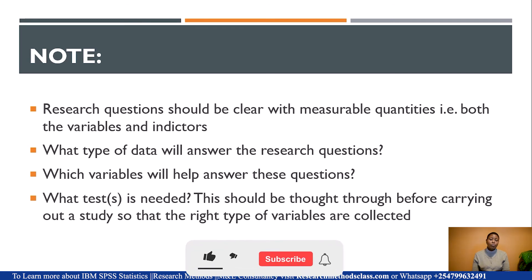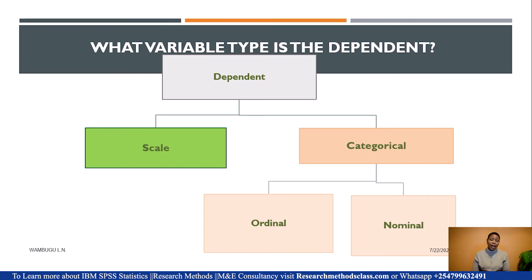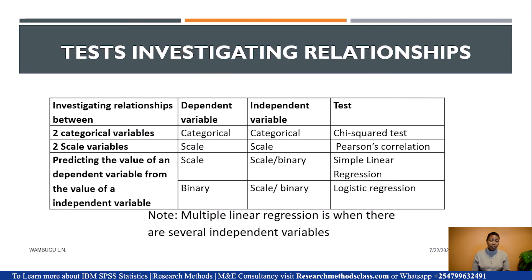We also need to consider what type of data will answer the research question — will it be continuous or categorical? Which variables will help answer these questions — will they be binary, quantitative, categorical, or another type? Then ask: what test is needed — correlation, regression, or comparing means? The dependent variable is very key: when it is scale (continuous, measured at interval or ratio), it requires different statistical tools than when it is categorical (ordinal or nominal). Let's look at statistical tools selected based on the type of variables you have.